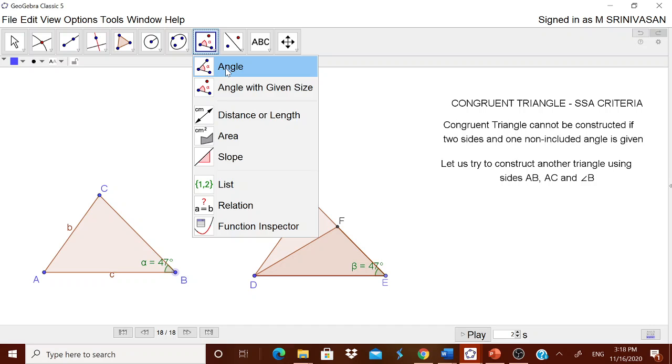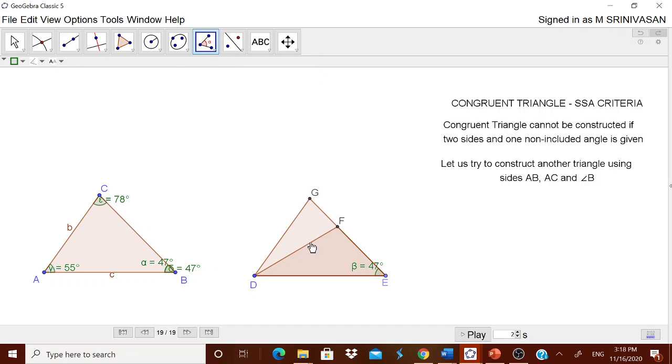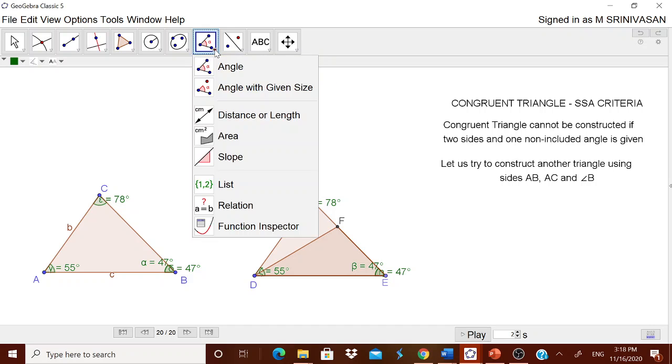Therefore you have not constructed a congruent triangle. Now if you want to get all the angles, that's one way of doing it. You can click this angle and then click it two times, it will come. Click it two times, it will come. Click it automatically.